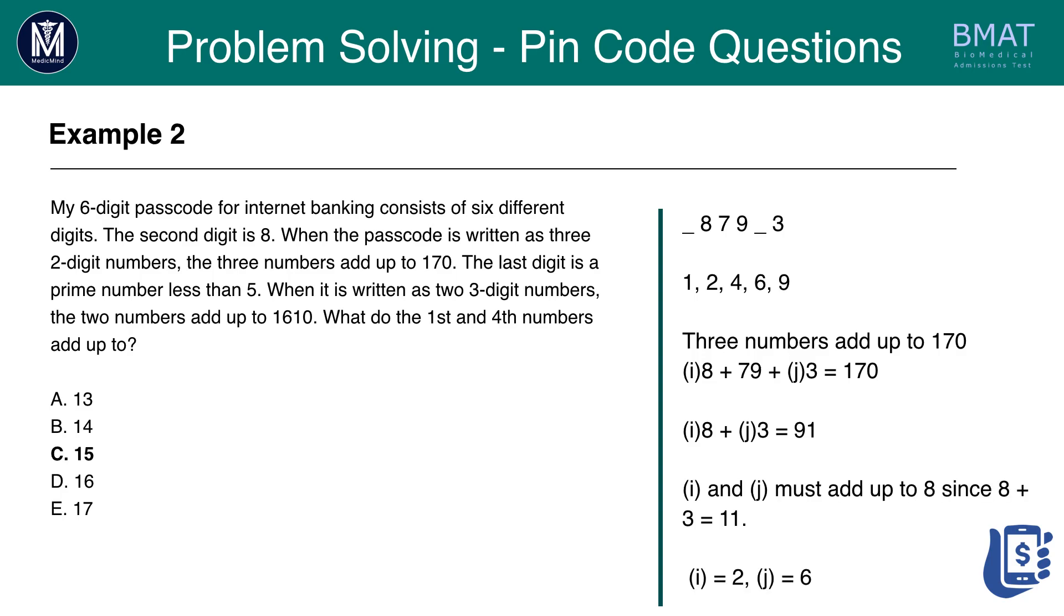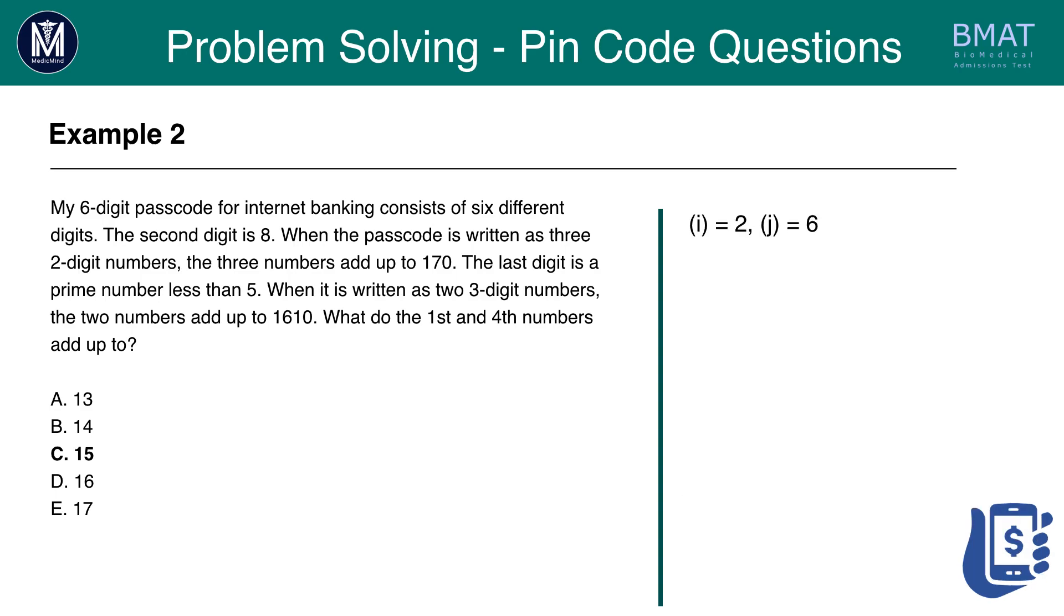I could be 2 and J could be 6, or I could be 6 and J can be 2. To find out which scenario is correct, we really just have to use trial and error. With option one we have 287963. This adds up to 1250 with the three large numbers. This is not what we require. We require it to add to 1610. If we try 667 plus 923 that gives us what we need, 1610. Therefore we know that this is the final correct sequence. The first number is 6 and the fourth digit is 9 and they add up to 15. Therefore the answer is C, 15. I hope that makes sense. That was a really tough example.